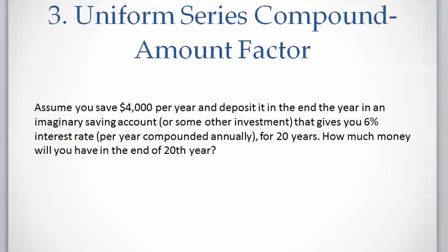Let's work on an example to see how this factor can be used. Assume you save $4,000 per year and deposit it in the end of the year in an imaginary saving account or some other investment that gives you 6% interest rate per year compounded annually.